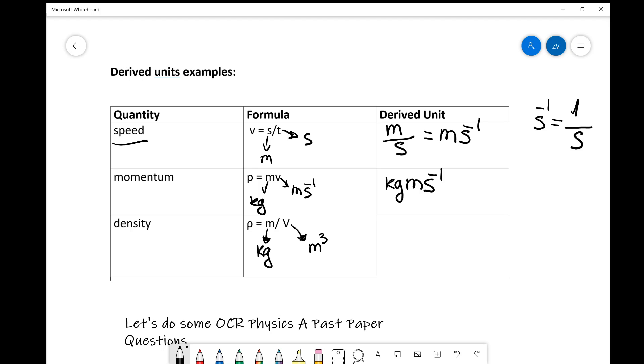So the derived unit in terms of base units for density is going to be kilograms divided by meters cubed, which we can also write as kg m to the power of minus three. Perfect. So these were some relatively simple examples to get us started with this.